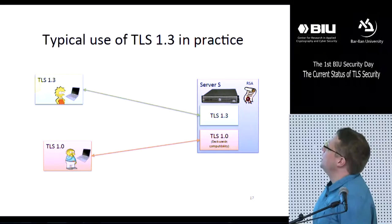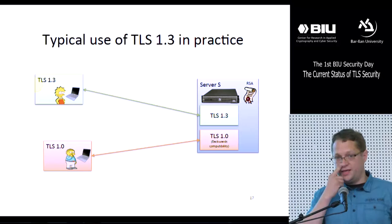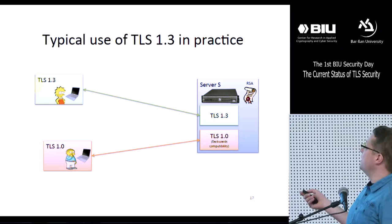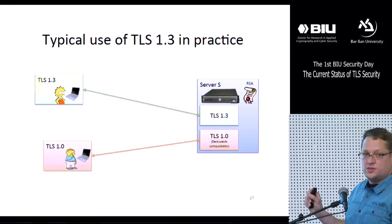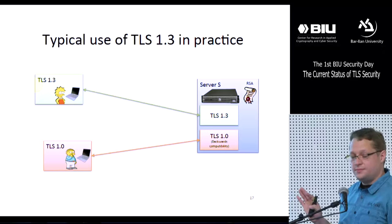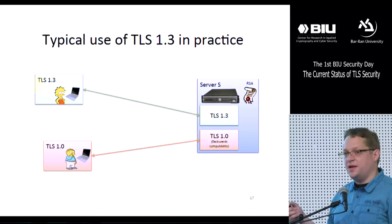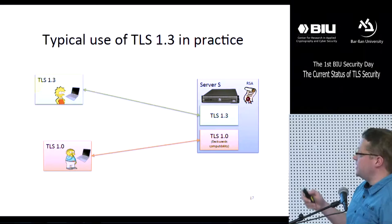Let's look at how TLS 1.3 will typically be used in practice. We consider a scenario where a web server implements TLS 1.3 and also offers some old version for backwards compatibility, like TLS 1.0. In this example, the server uses the same RSA certificates for both protocol versions — this is a standard setting, essentially all servers do it this way.